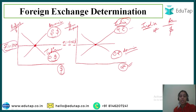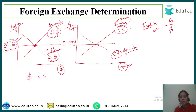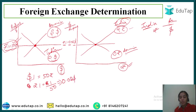Where the demand and supply of dollars and the demand and supply of rupees are equal, the exchange rate is determined. Let's say 1 dollar equals 50 rupees. Then 1 rupee equals 1/50, which is 0.02 dollars. So the foreign exchange rate is determined by taking into account the supply and demand of both currencies.